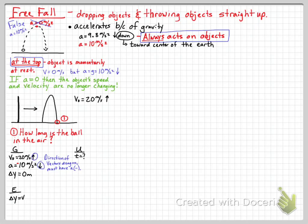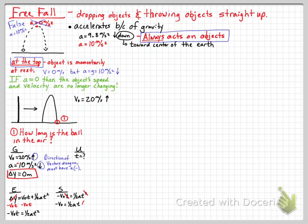Our equation is Δy = v₀t + ½at². Since Δy = 0, we can cancel that term and rearrange: −v₀t = ½at². Dividing both sides by t (which cancels one factor of t) and solving for t gives t = −2v₀/a. Plugging in our values — initial velocity of 20 m/s and acceleration of −10 m/s² — we get time equals four seconds. That's how long the ball is in the air.